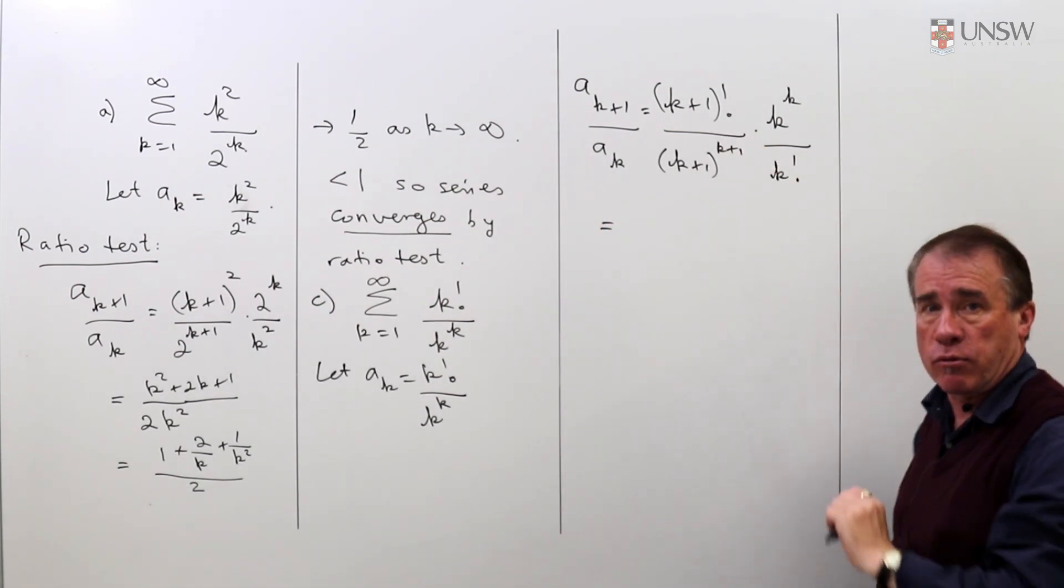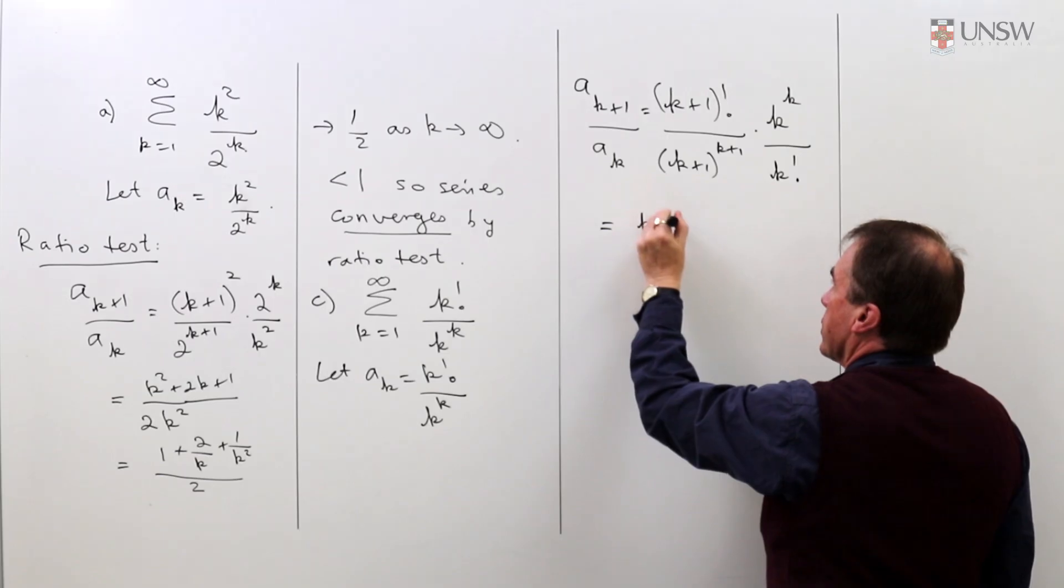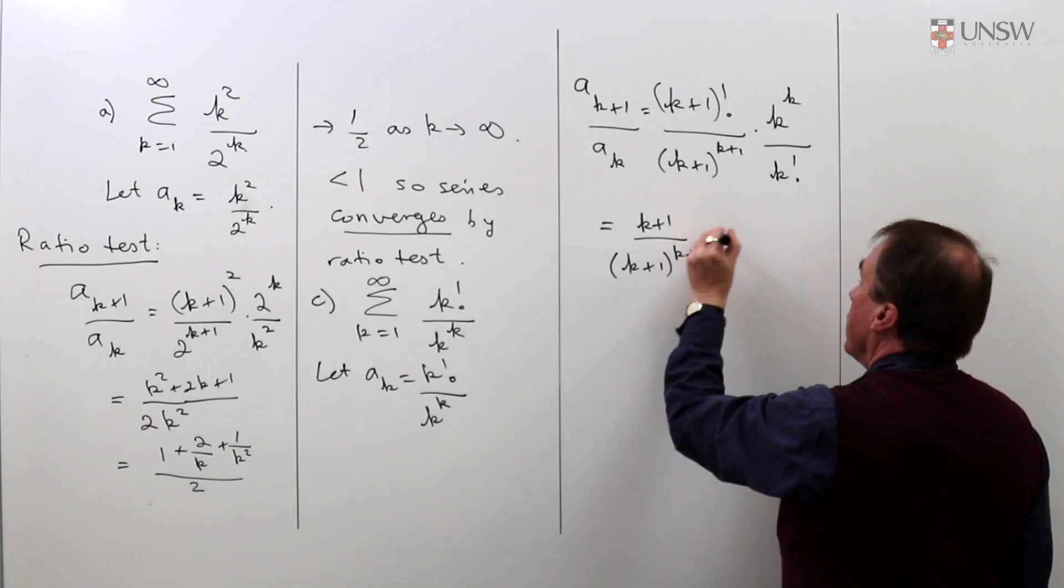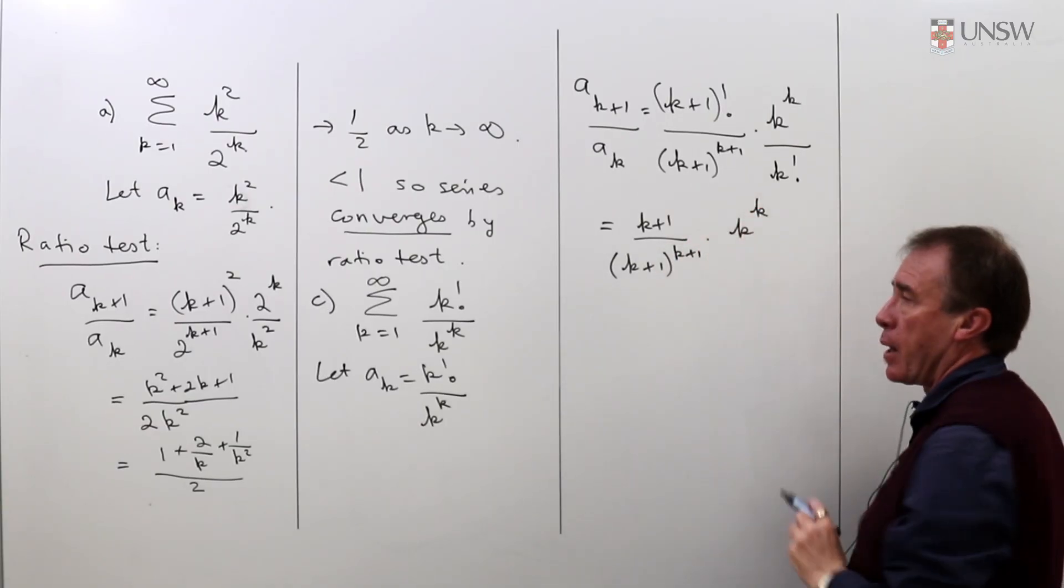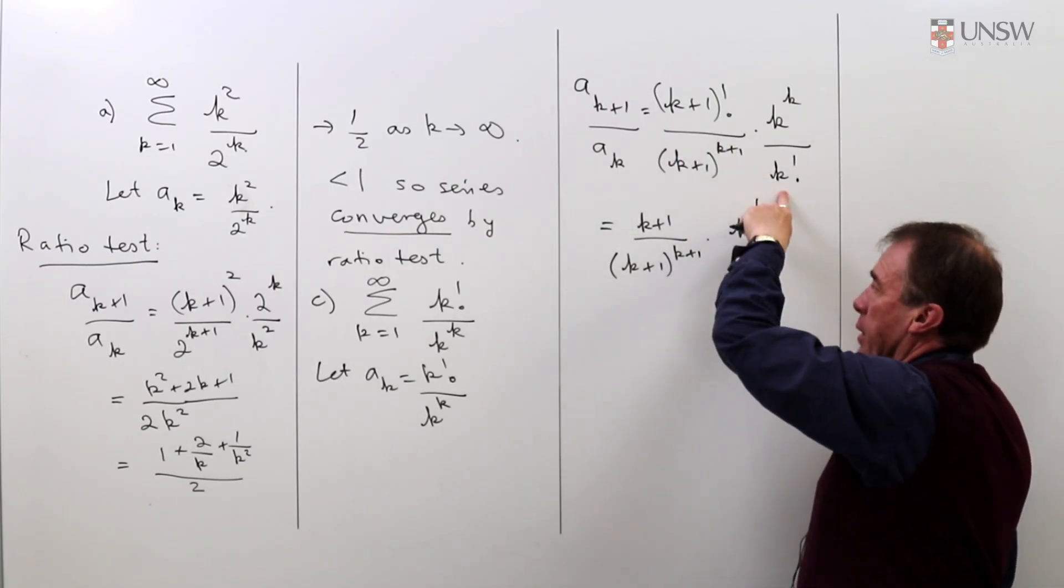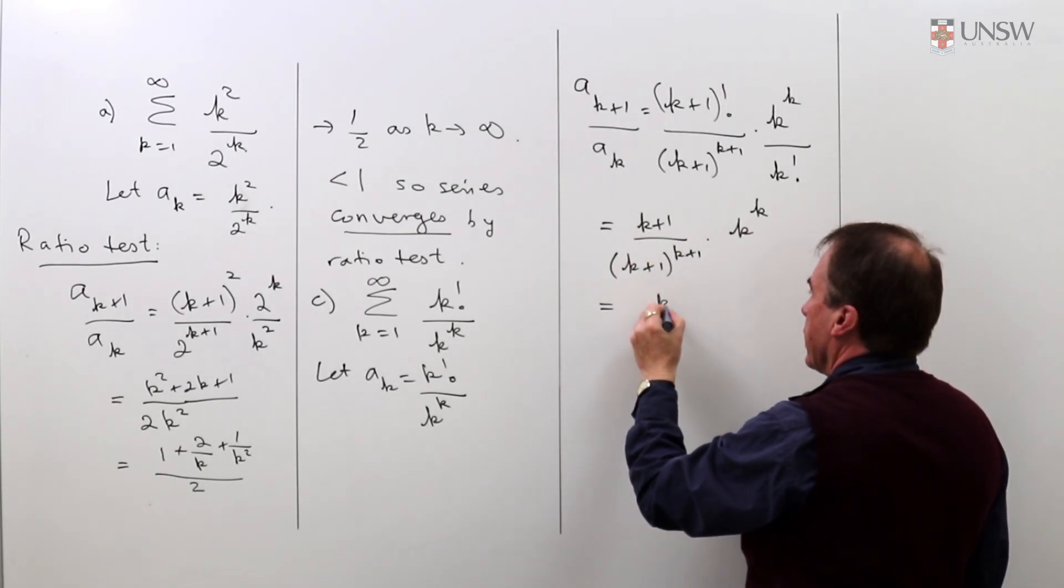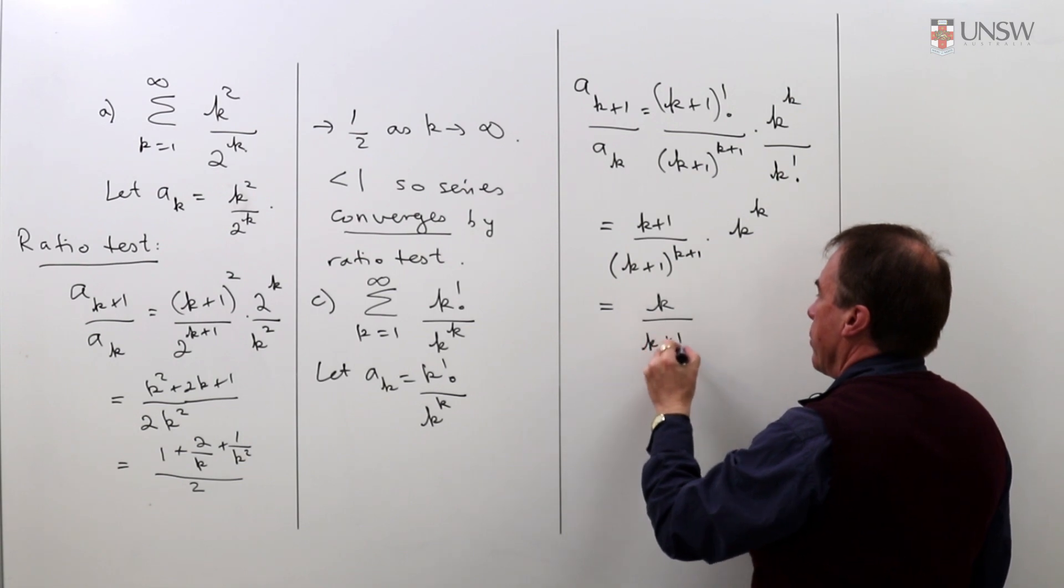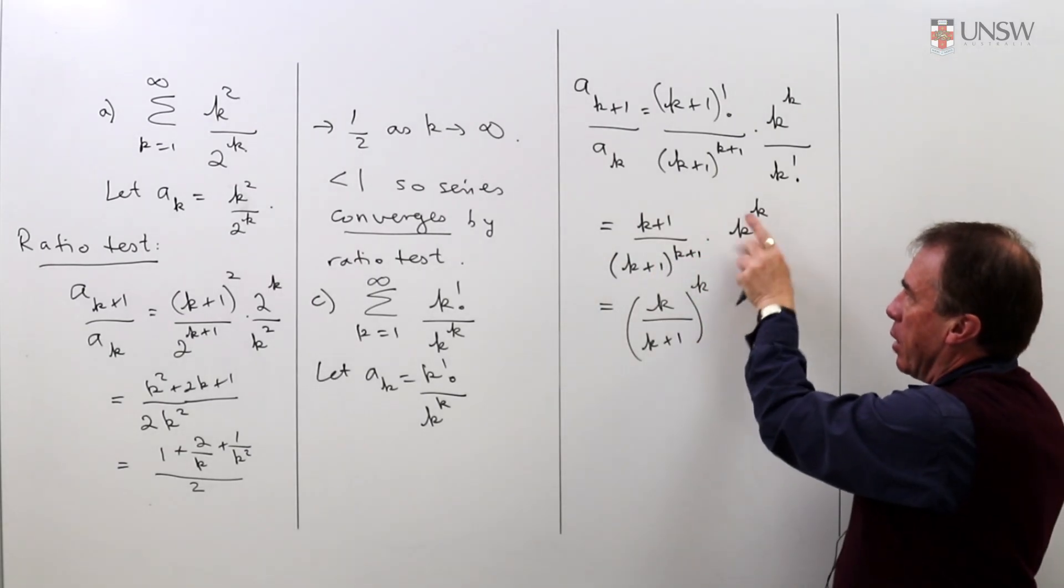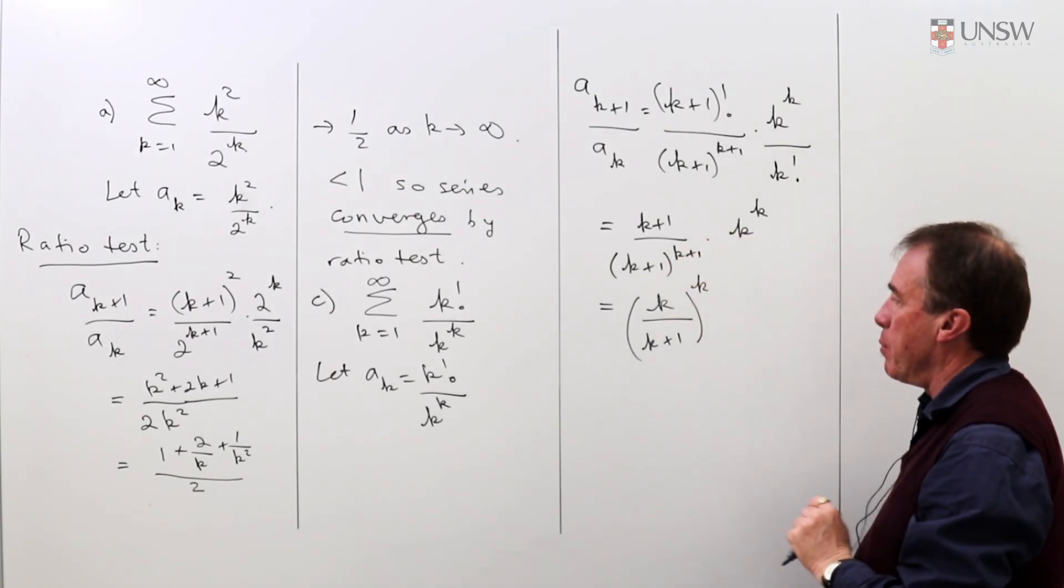I can cancel out a bit of the factorials. This is really k plus 1 times k factorial, so I get k plus 1 over k plus 1 to the k plus 1 and I've still got k to the k sitting there. Be very careful how you cancel. I can cancel out this with one of these and I get both k and k plus 1 to the power of k. I cancel out one of the k plus 1's, then have k to the k on k plus 1 to the k and bring them under the same power k.